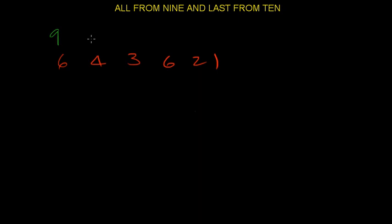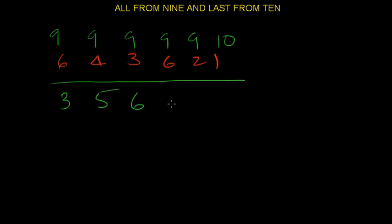All from 9. 9, 9, 9. All from 9. Last from 10. What do we get? Complement of 6 would be 3. Complement of 4 would be 5. Complement of 3 would be 6. Complement of 6 is 3, 7, and 9.